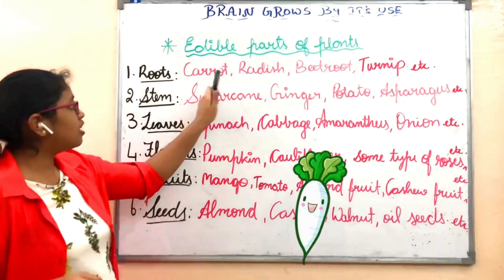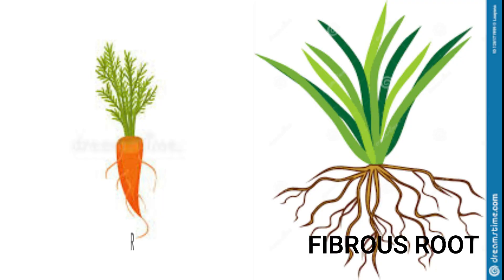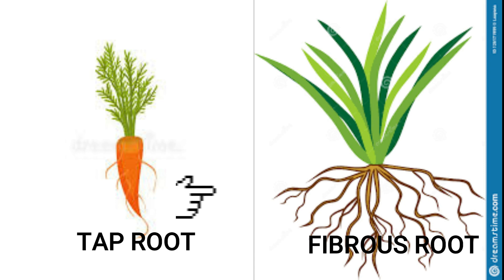We eat roots in the form of carrot, radish, beetroot, turnip, etc. Roots are of two types: taproot and fibrous roots. In some plants like carrot, turnip, beetroot, and radish, the root system consists of a main root called a taproot and its branches. The taproot grows vertically down into the soil and gives out smaller branches called lateral roots. In some plants like wheat, maize, sugar cane, and banana, there is no main root — a number of roots arise in a cluster below the stem and spread out in the soil; such roots are called fibrous roots.